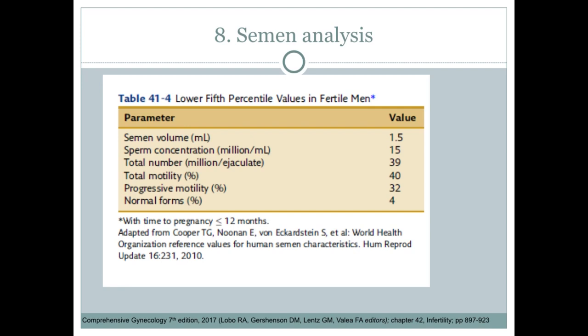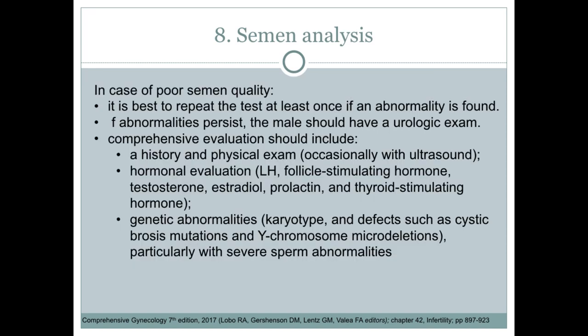The WHO criteria for semen analysis — the most important parameters to know are sperm concentration, motility, and percent normal forms. In cases of poor semen quality, it is best to repeat the test at least once. If abnormalities persist, the male should be referred to a urologist. Comprehensive evaluation should include history and physical exam, hormonal evaluation including LH, FSH, testosterone, estradiol, prolactin, and TSH, as well as screening for genetic abnormalities, particularly with severe sperm abnormalities.